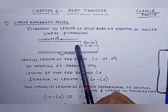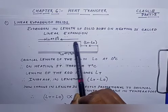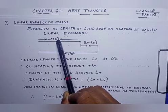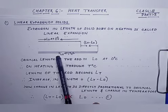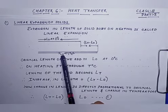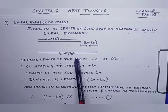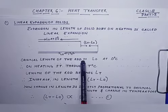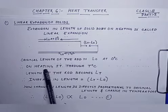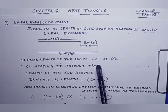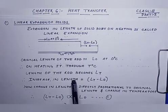Expansion in length of a solid body on heating is called linear expansion. It is expansion in one dimension, that is the increase in length. I have taken an example of a rod. The original length of the rod is L0 at 0 degree Celsius. When we apply a temperature of T degree Celsius, the length increases and becomes Lt. So the increase in length will be Lt minus L0.